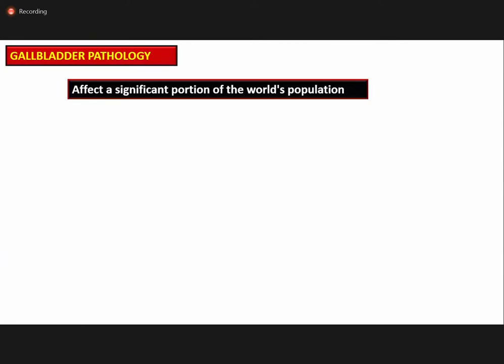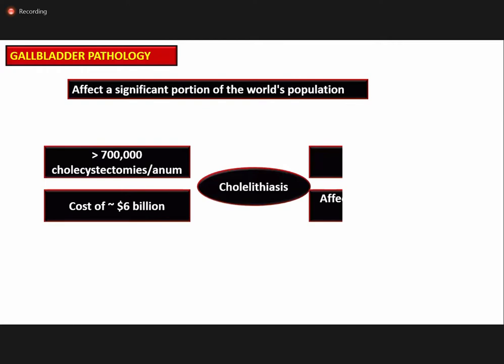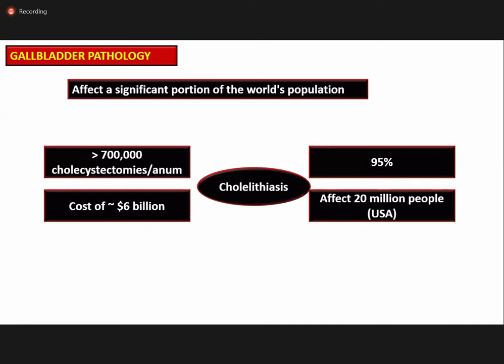The pathologies of the gallbladder affect a significant proportion of the world's population. Cholelithiasis accounts for about 95 percent of gallbladder disease and affects 20 million people in the USA. Approximately 700,000 cholecystectomies are performed per annum, creating a burden of about 6 billion dollars to the economy.